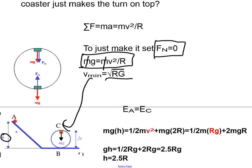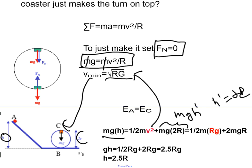We use conservation of energy. The total energy at point A, which is mgh, is equal to the total energy at point C, which is one half mv squared plus mg times 2r - this is the potential energy, where the height at point C equals twice the radius. By setting those two equal and plugging in v squared equals rg, all the masses cancel. So gh equals 2.5 times the radius of the circle, meaning h equals 2.5r.